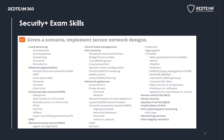Network Access Control (NAC) checks a machine before it connects to the network — for instance, verifying that antivirus is installed, and denying connection if it is not. Port security is a mechanism that allows or denies network connections based on MAC address.